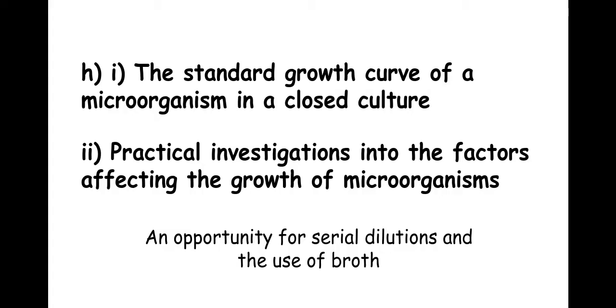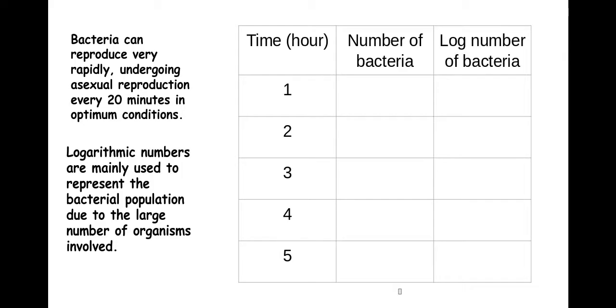This is also known as batch culture. Now we should know that bacteria reproduce really quickly and they can actually reproduce every 20 minutes. Normally what we do when we're using bacterial numbers is we talk about logarithmic numbers instead, because it's easier to talk about smaller numbers.